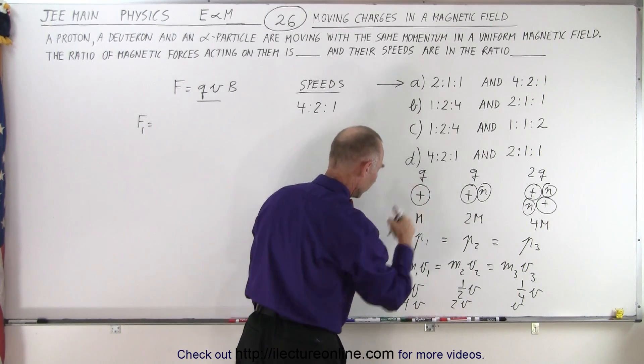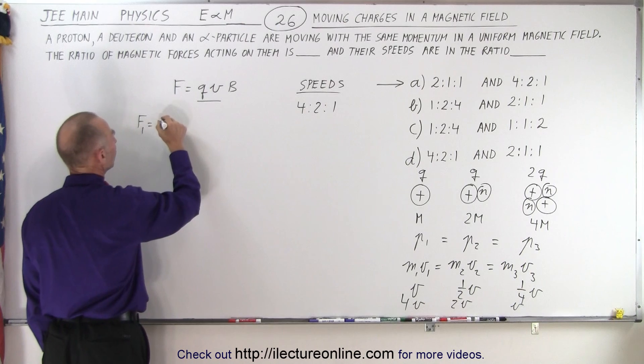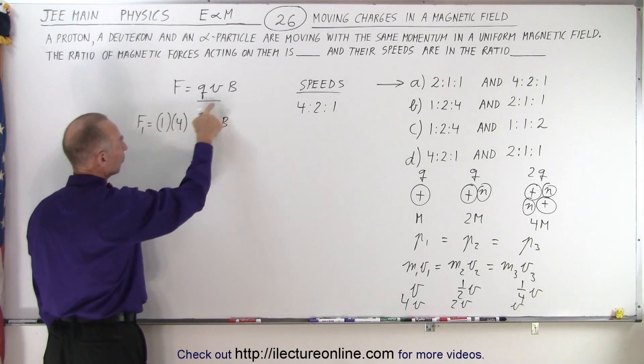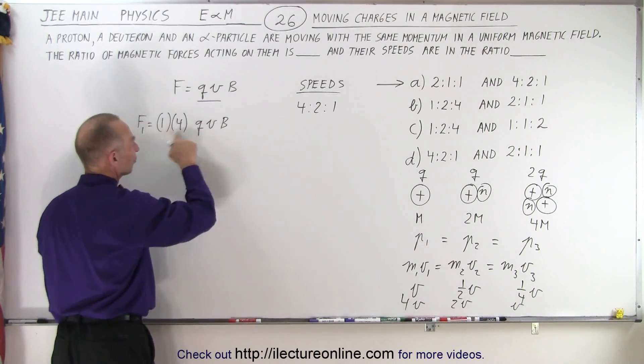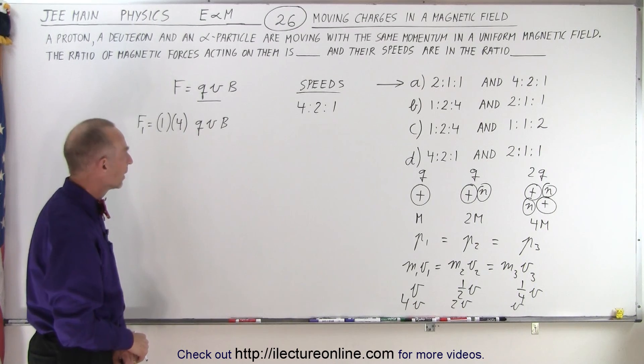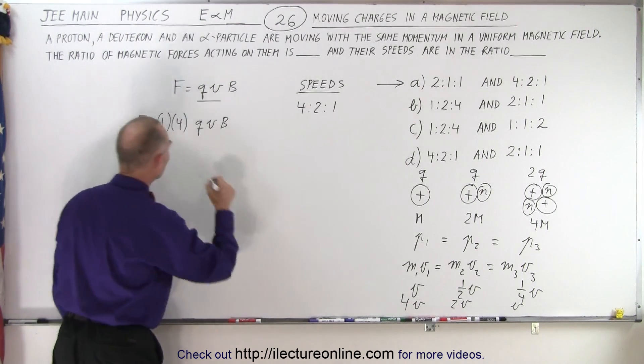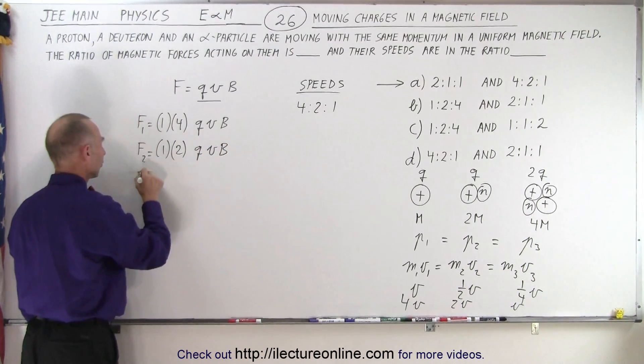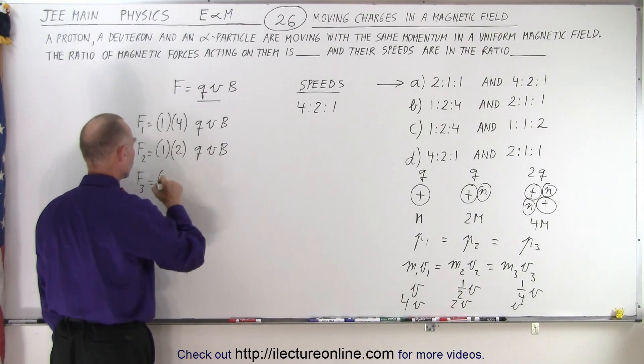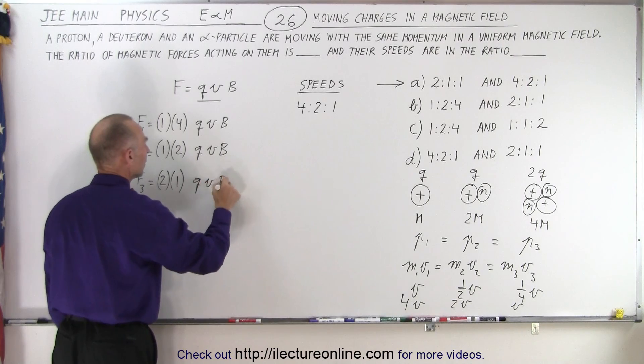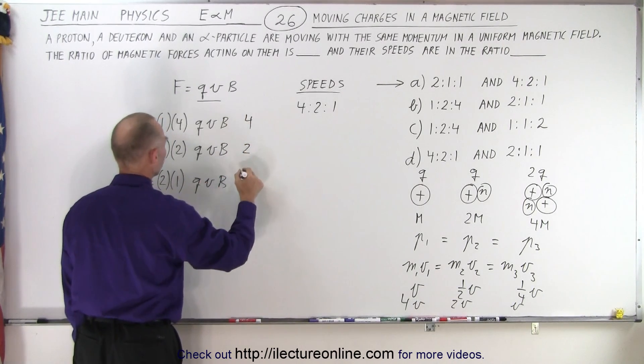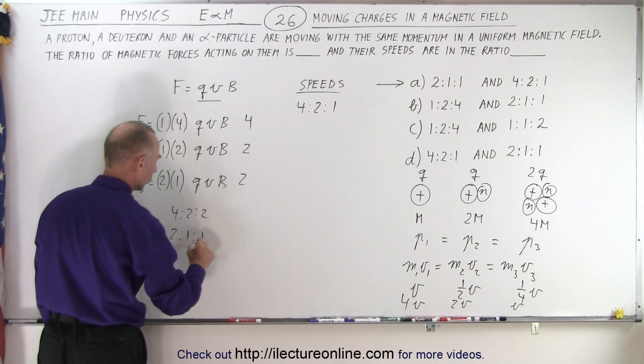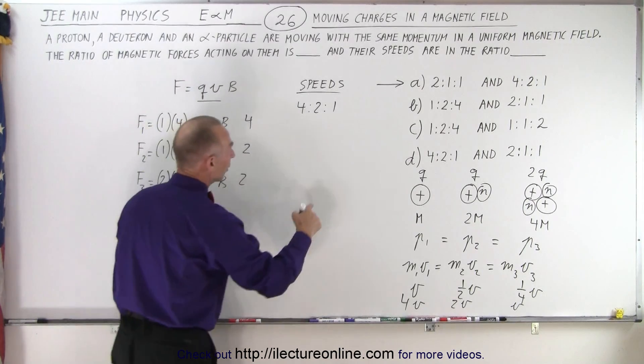So I can say that force 1 is equal to q1 times v1. So I can say q1 is q, v1 is 4v, so I end up with 1q times 4v. So this would be 4qvb for the first particle. How about the force on 2? The charge is 1 and the velocity is 2v, that would be 2qvb, and then the force on the third particle is equal to, the charge is 2q and the velocity is 1v, so 2qvb. Ratio-wise we have a 4 to 2 to 2, or if we divide everything by 2, that means that I have a ratio of 2 to 1 to 1. So those are the ratios of the forces, and here are the ratios of the speeds.